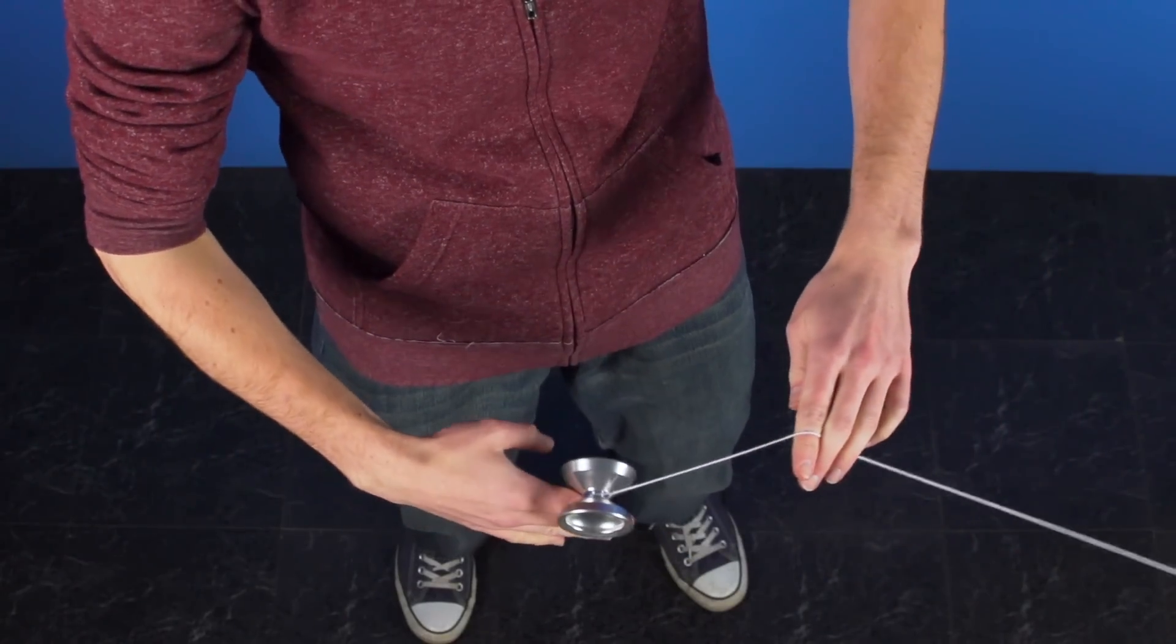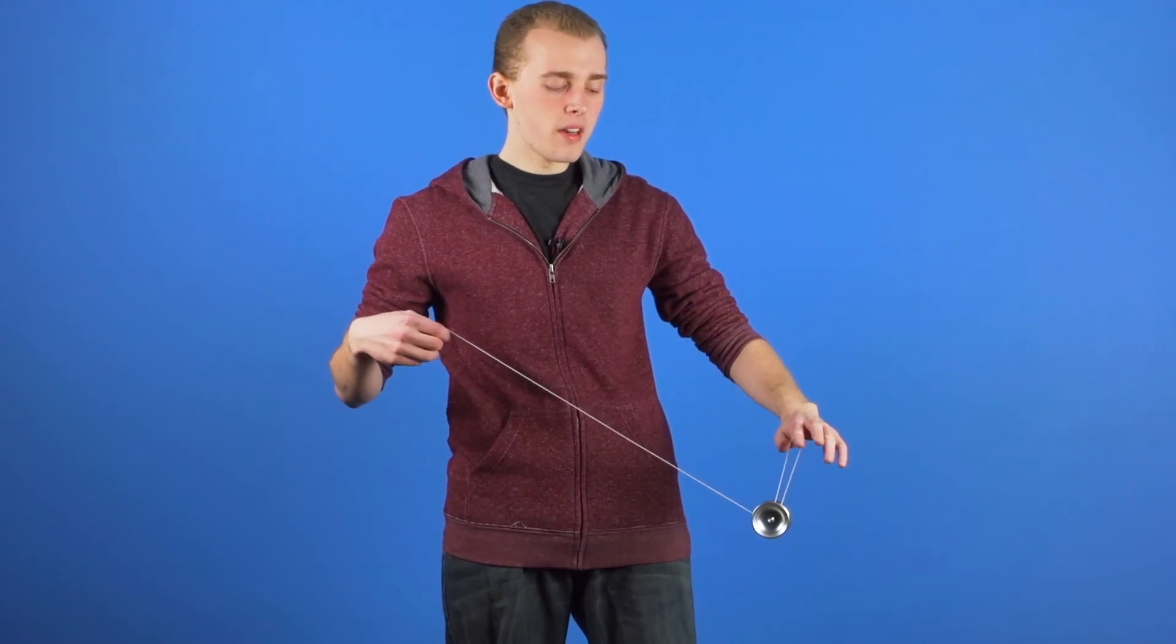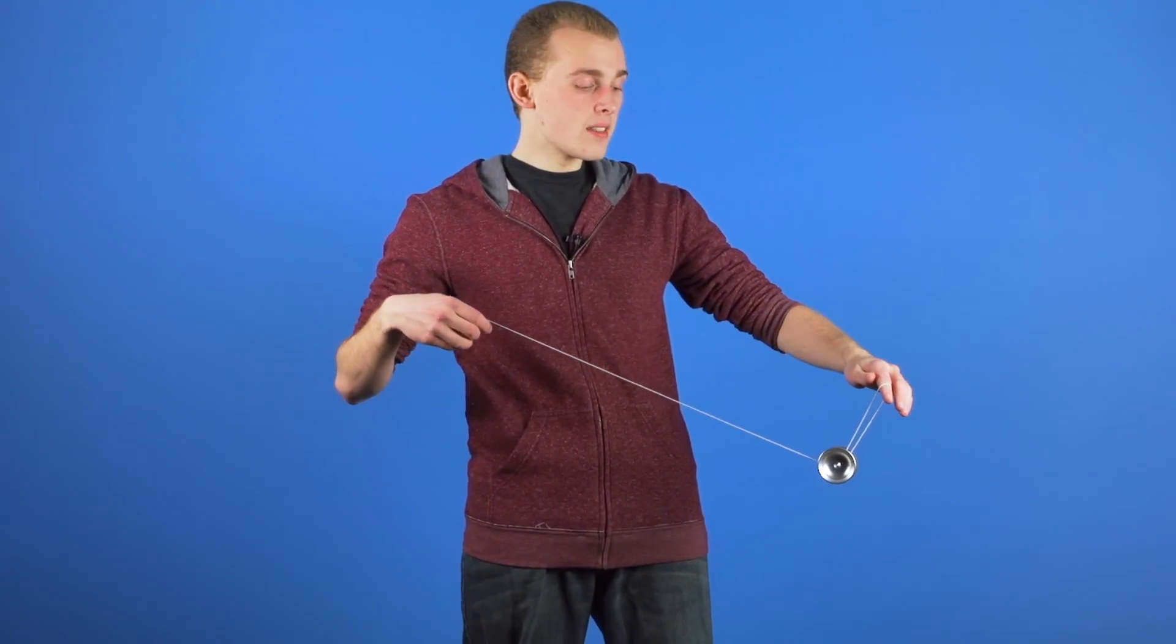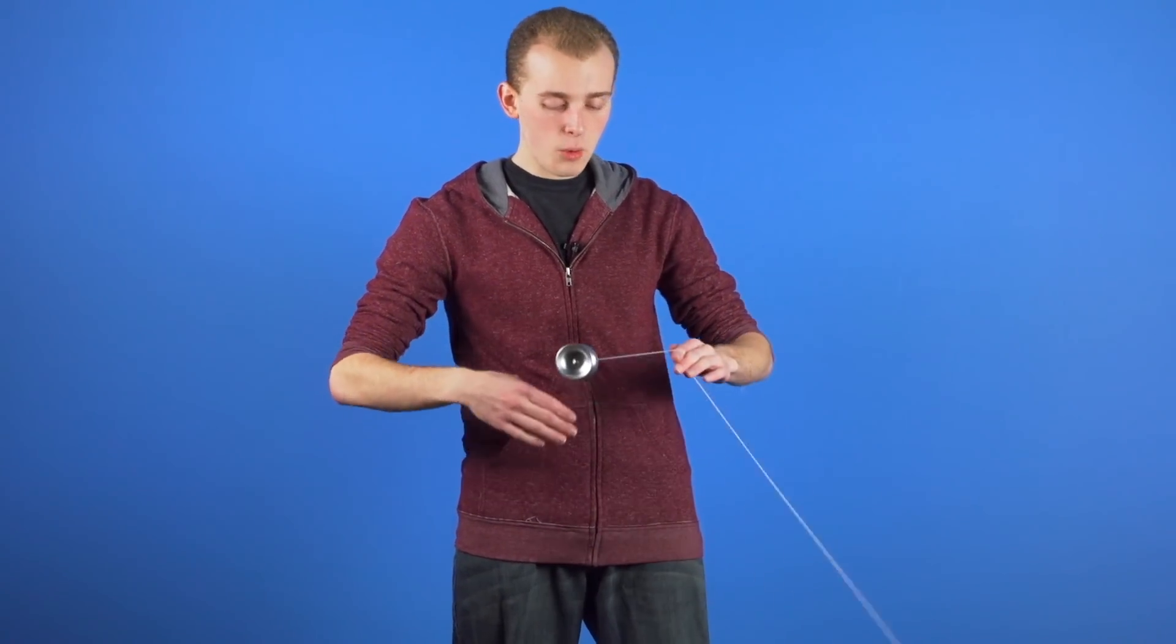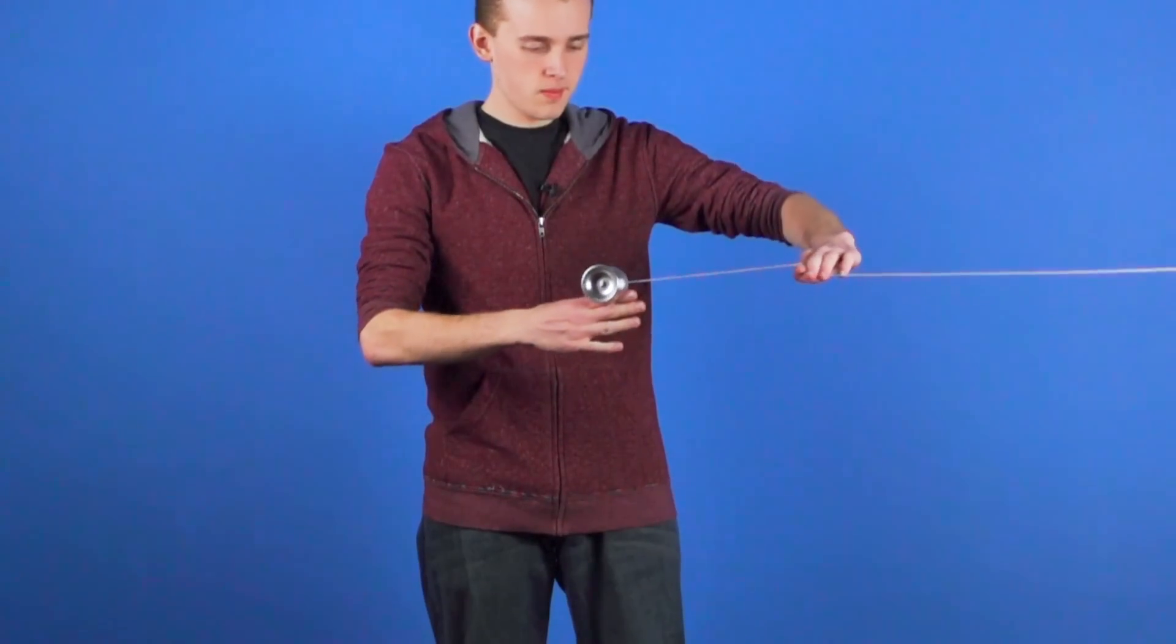During this finger grind, the counterweight is going to be swinging toward your opposite hand side. So as the yoyo is grinding, you want to take your opposite hand and slide it down the string leading to the counterweight about halfway down and stall the counterweight.